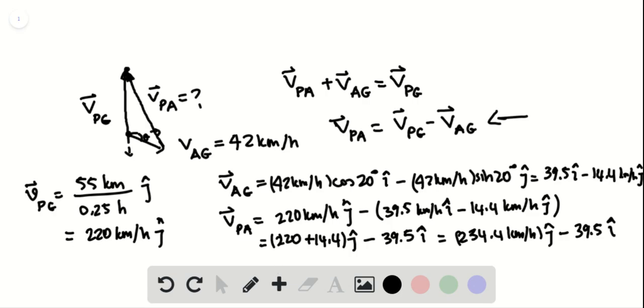Now we're asked for the magnitude of this vector. We add the X component squared to Y component squared and take the square root.